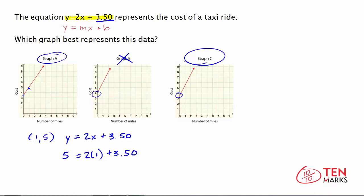Let's begin by multiplying. 2 times 1 is 2 plus 3.5. 5 stays the same. 2 plus 3.5 is 5.5. This equation does not hold true, which means this graph does not represent the data shown or the equation given.